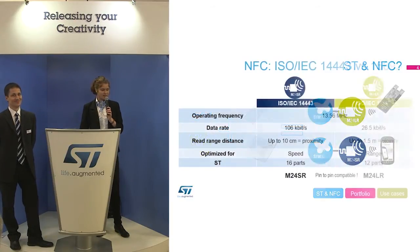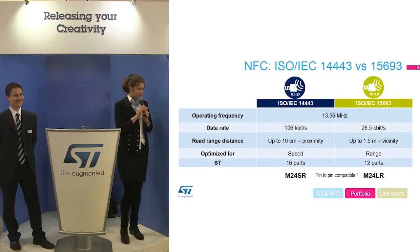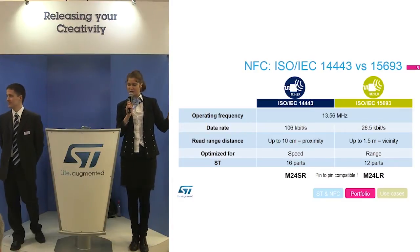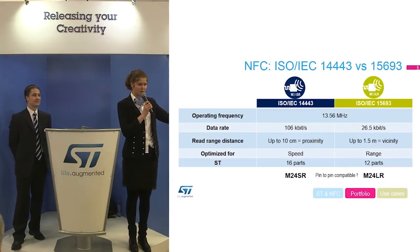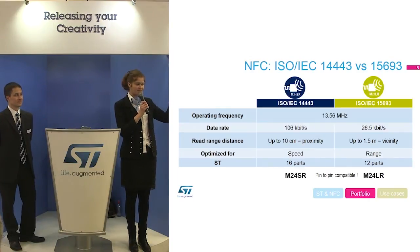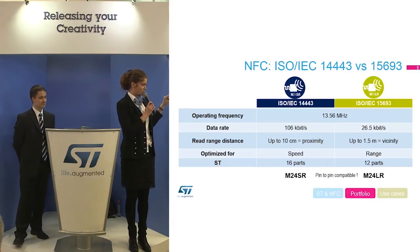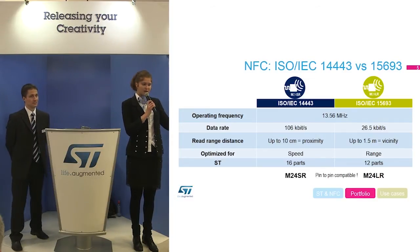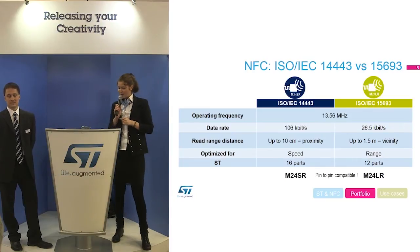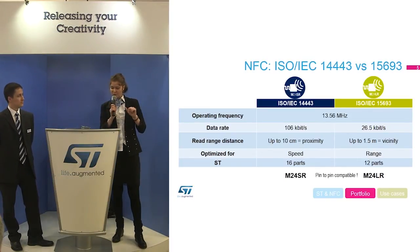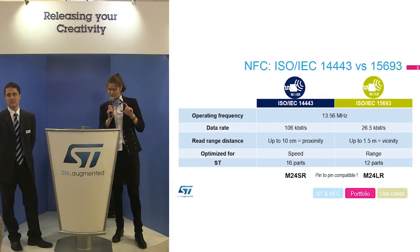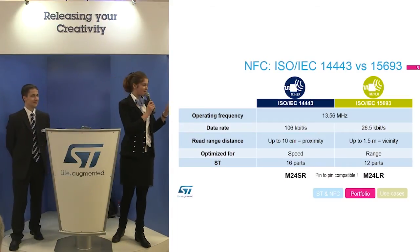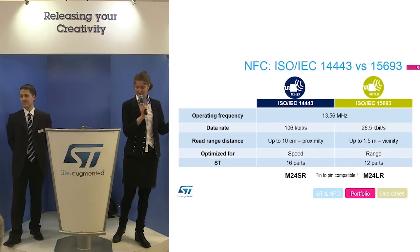Let's go into more detail on these products. There are two different protocol families. The first is ISO 14443, which has the highest data rate at 106 kilobits per second, the highest consumption, and the smallest read range. The M24LR uses ISO 15693 — it is NFC compatible — with a data rate of 26 kilobits per second, the smallest consumption, and therefore a better read range. So the M24SR is optimized for speed and the M24LR is optimized for range.